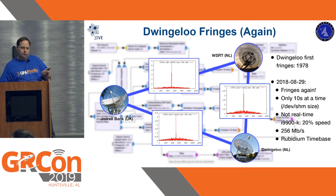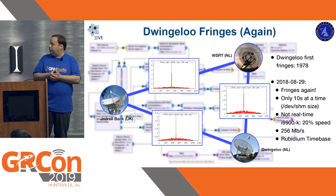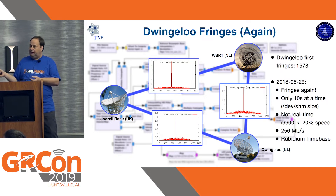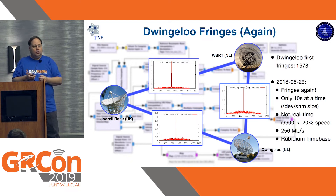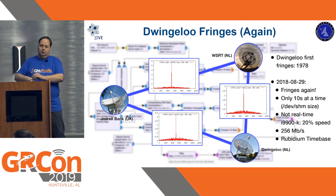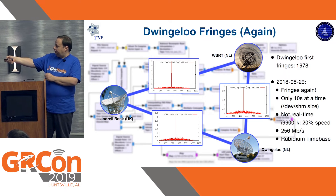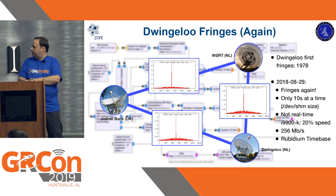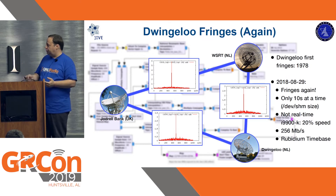Using this flowchart, last August we did our first VLBI observation with the radio telescope — though actually the telescope first did this in 1978 using a borrowed rubidium clock. We did the same: we borrowed a rubidium clock and cross-correlated between the Westerbork telescope in the Netherlands, our Dwingeloo telescope, and the Jodrell Bank Mark II radio telescope in the UK. The cross-correlation shows just one nice peak in the center, which shows that this actually works — though at that time we could only record to memory for 10 seconds at a time.